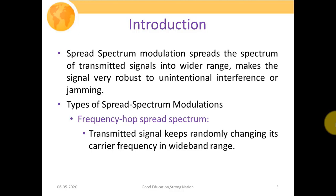Spread spectrum modulation spreads the spectrum of the transmitted signal into a wider range, making the signal very robust to unintentional interference or jamming. In spread spectrum modulation schemes, we spread the spectrum of the transmitted signal so it becomes very robust to jamming. In FHSS, the transmitted signal keeps randomly changing its carrier frequency in a wide band — unlike traditional narrowband communication systems where the carrier frequency is fixed.